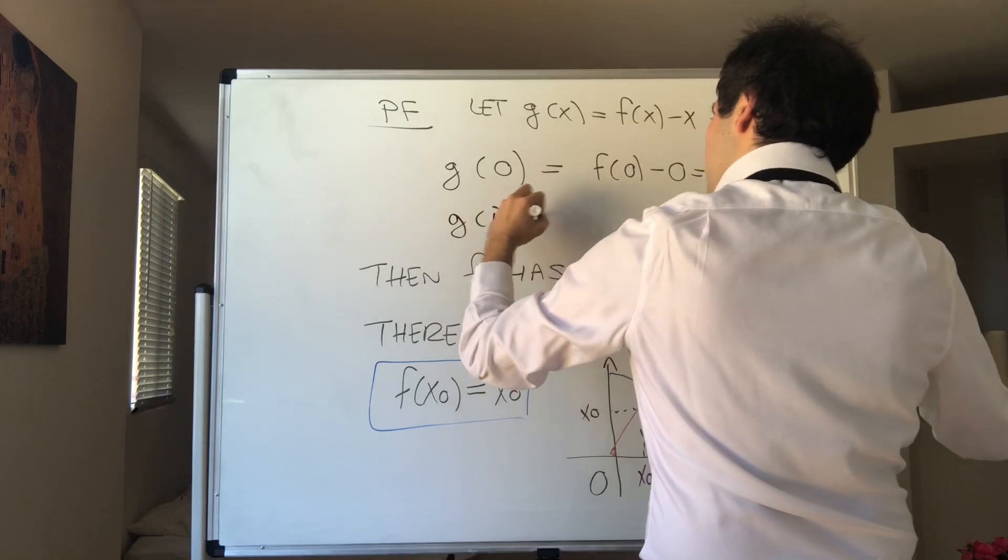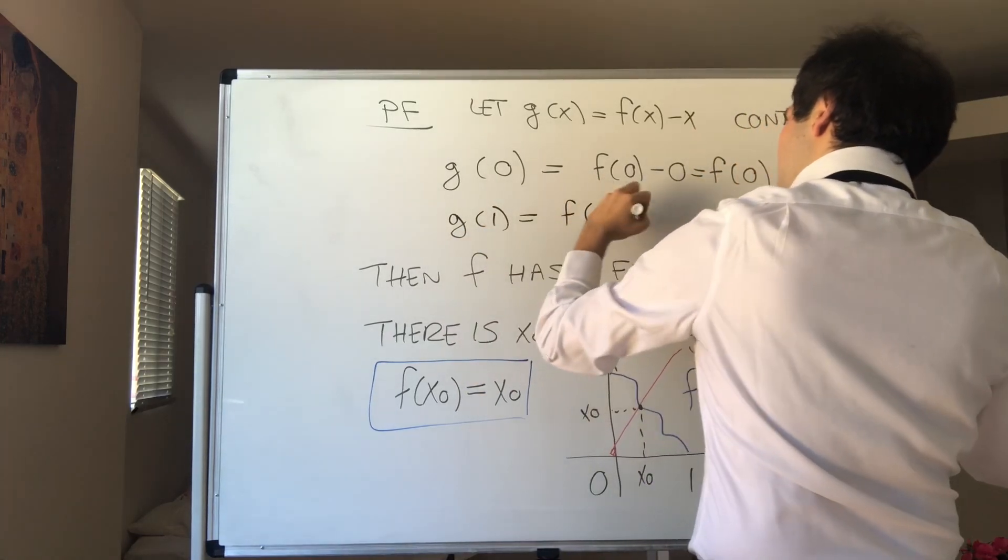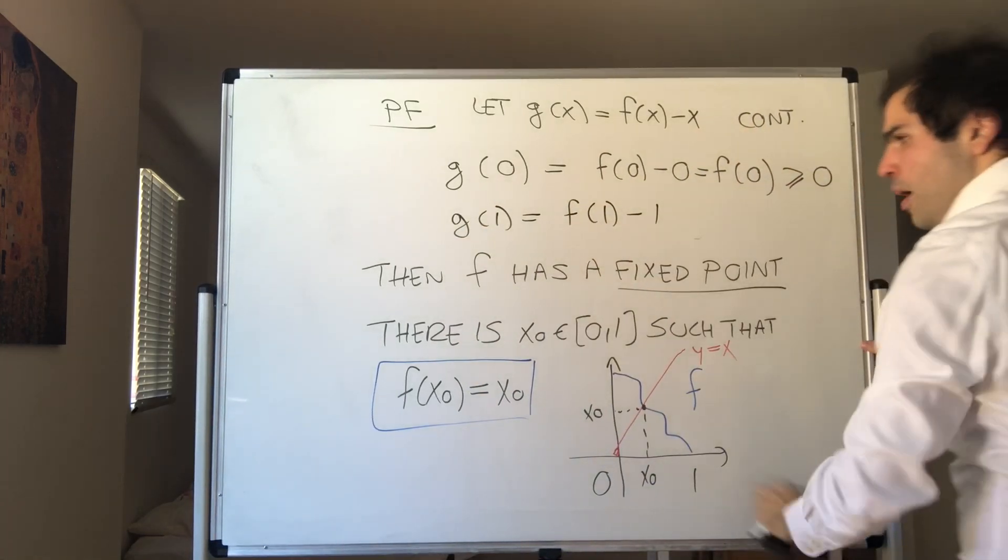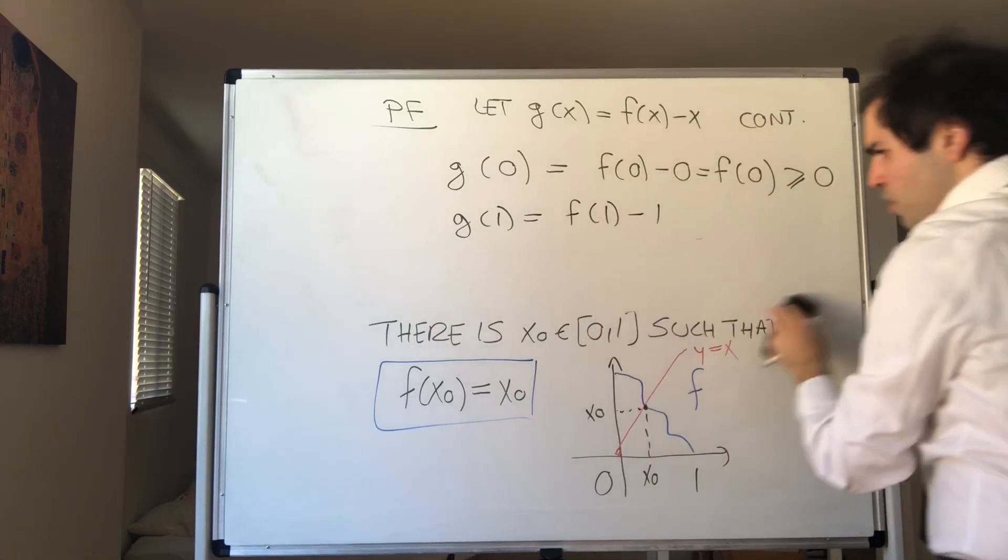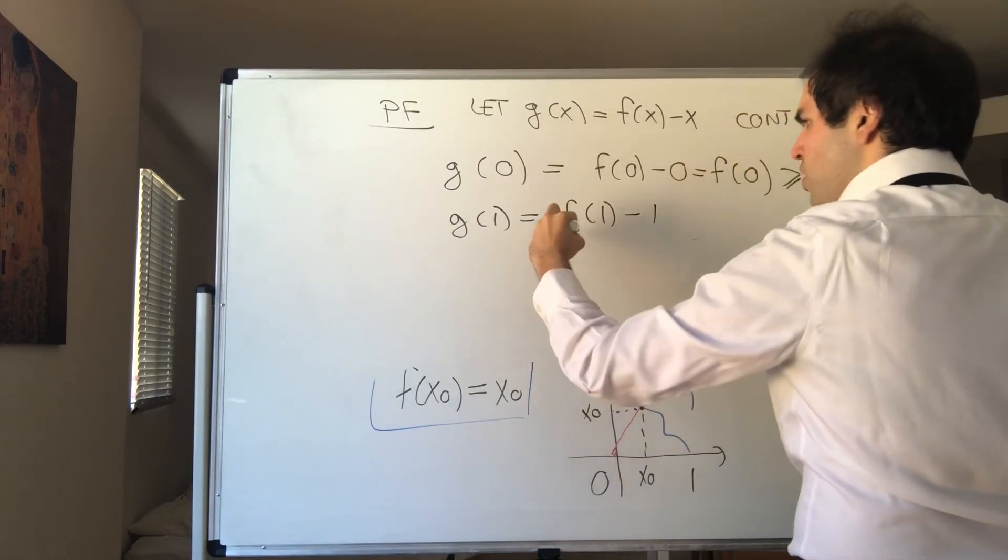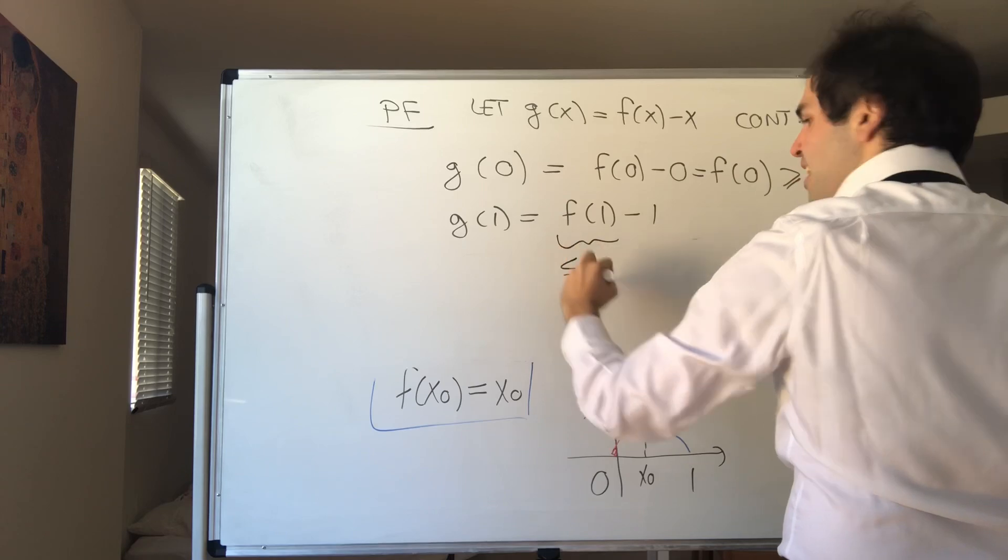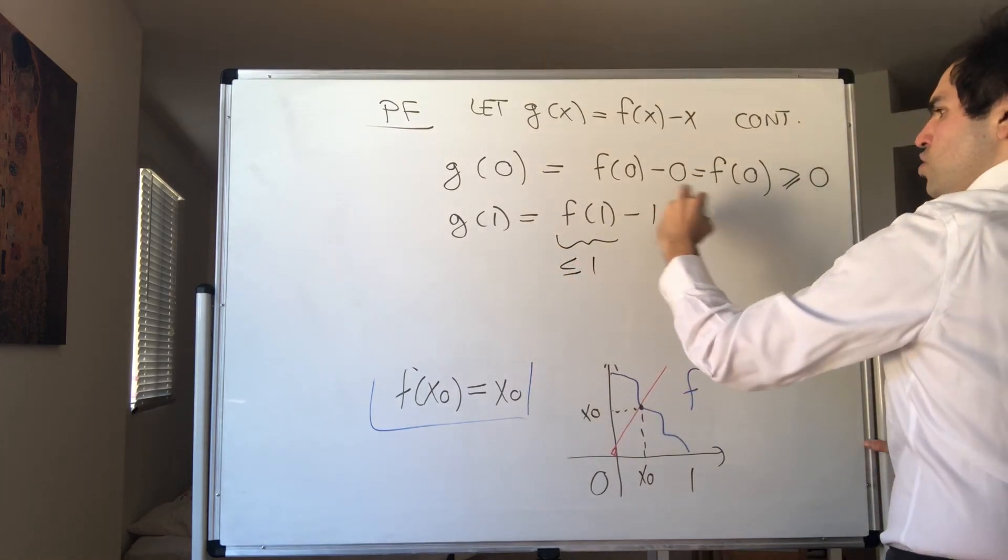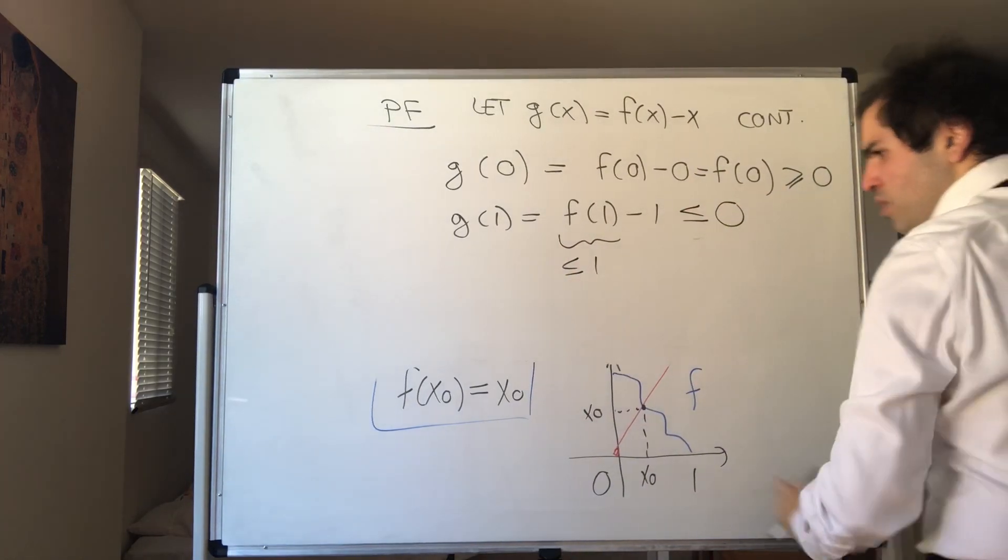On the other hand, g(1) is f(1) minus 1, but remember, f is again between 0 and 1, so in particular, f(1) is less than or equal to 1, so g(1) is less than or equal to 0.